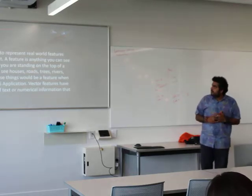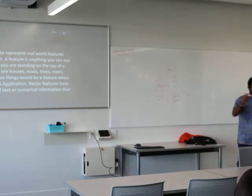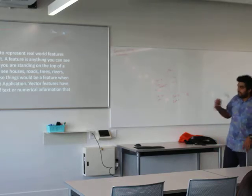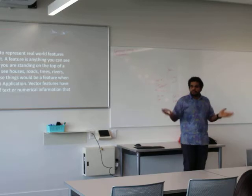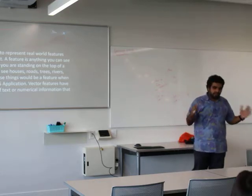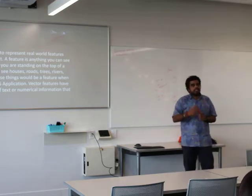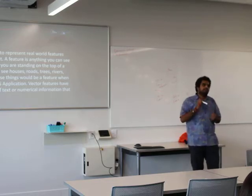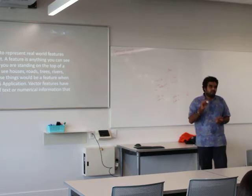Vector data provides a way to represent real-world features within the environment. A feature is anything you can see in the landscape — standing on top of a hill you can see rivers, mountains, houses — all of those can be represented as features on a map. Vector features have attributes. What makes GIS powerful is that not only do you have the geometry, you also have associated attributes with it — just like an Excel spreadsheet has textual attributes, in GIS you also have the geometry associated. Vector can be further broken down into three categories: points, lines, and polygons.